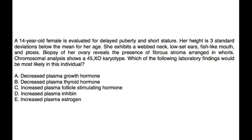A 14-year-old female is evaluated for delayed puberty and short stature. Her height is three standard deviations below the mean for her age. She exhibits a webbed neck, low-set ears, fish-like mouth, and ptosis. Biopsy of her ovary reveals the presence of fibrous stroma arranged in whorls. Chromosomal analysis shows a 45XO karyotype. Which of the following lab findings would be most likely in this patient?